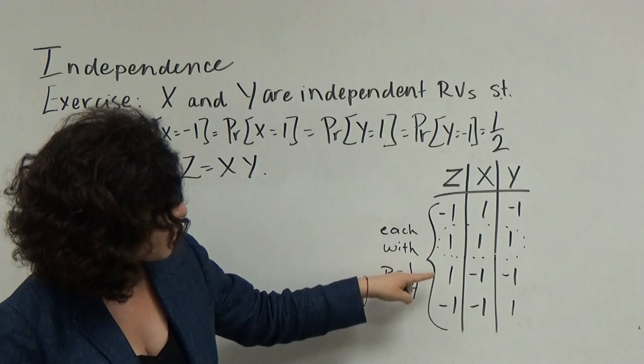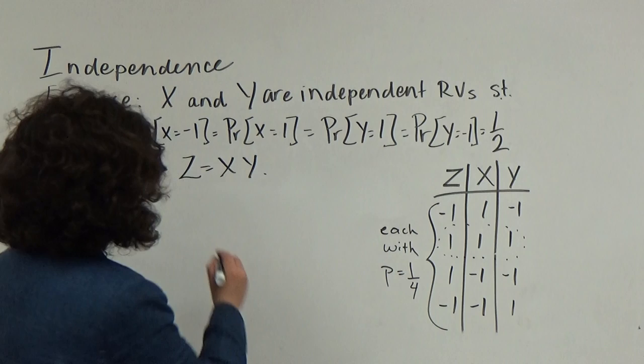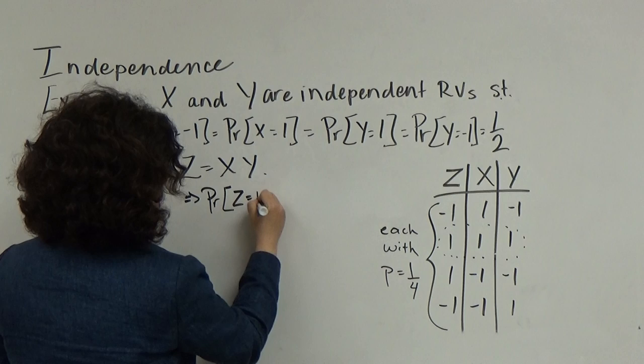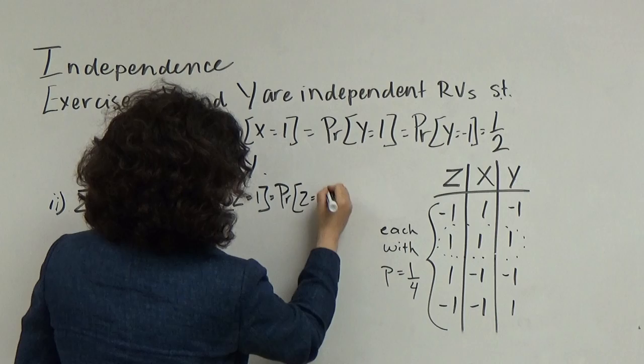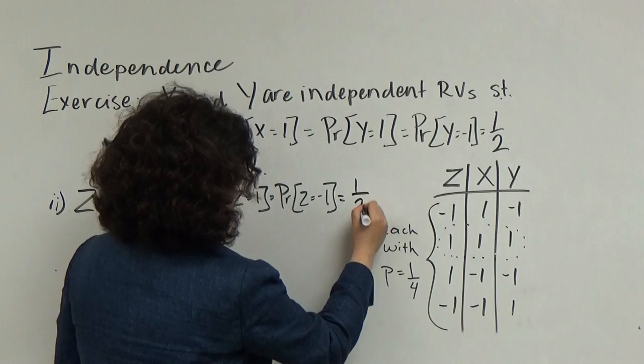As a result, each of these outcomes for z occurs with probability 1/4. This implies that the probability that z equals 1, or that z equals negative 1, is equal to 1/2, by adding the probabilities of the corresponding outcomes.